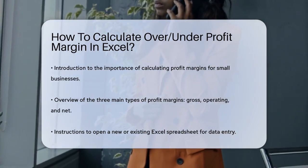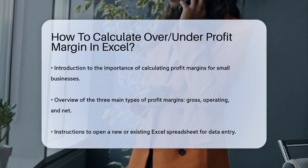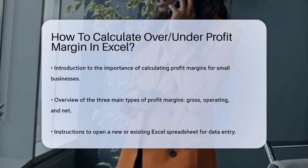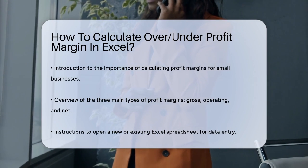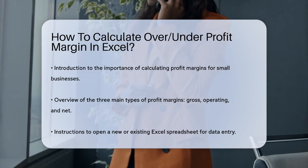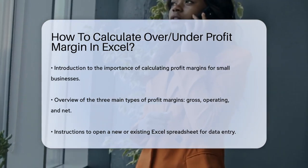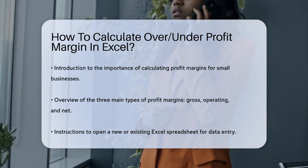First, you need to understand the three main types of profit margins: gross profit margin, operating profit margin, and net profit margin. Each of these gives you a different view of your business's profitability.